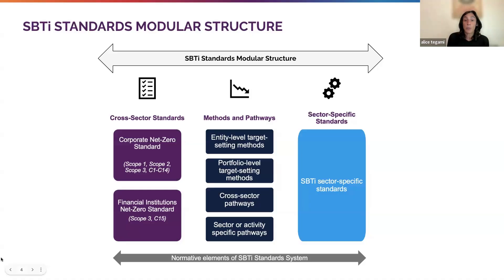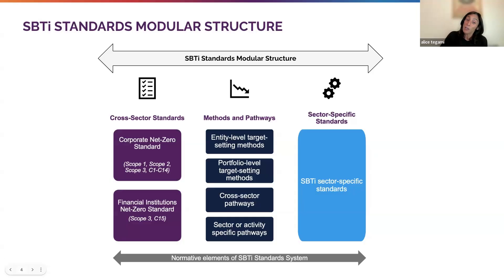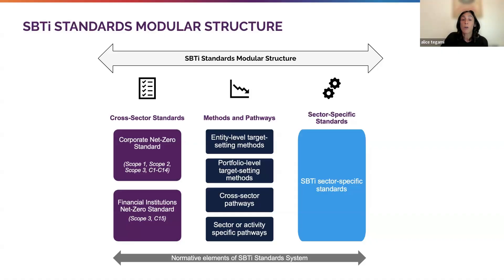At the core of our framework is the SBTI Corporate Net Zero Standard, which provides the baseline requirements for companies across sectors to set science-based targets for scope 1, 2 and relevant scope 3 emissions. As the SBTI evolves into a formal standard setter, we have adopted a new modular structure. This means the Corporate Net Zero Standard is complemented by sector-specific standards, like this one.